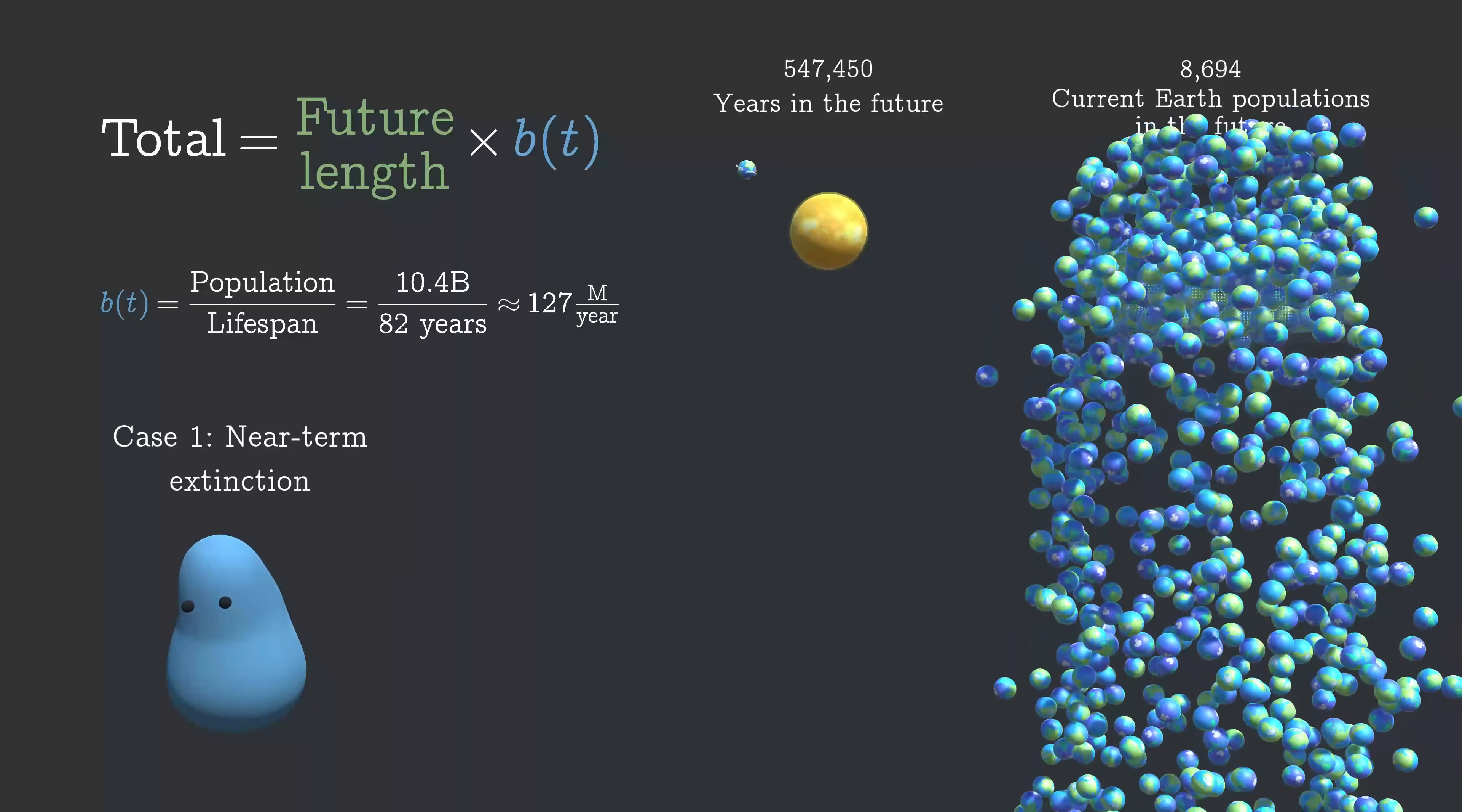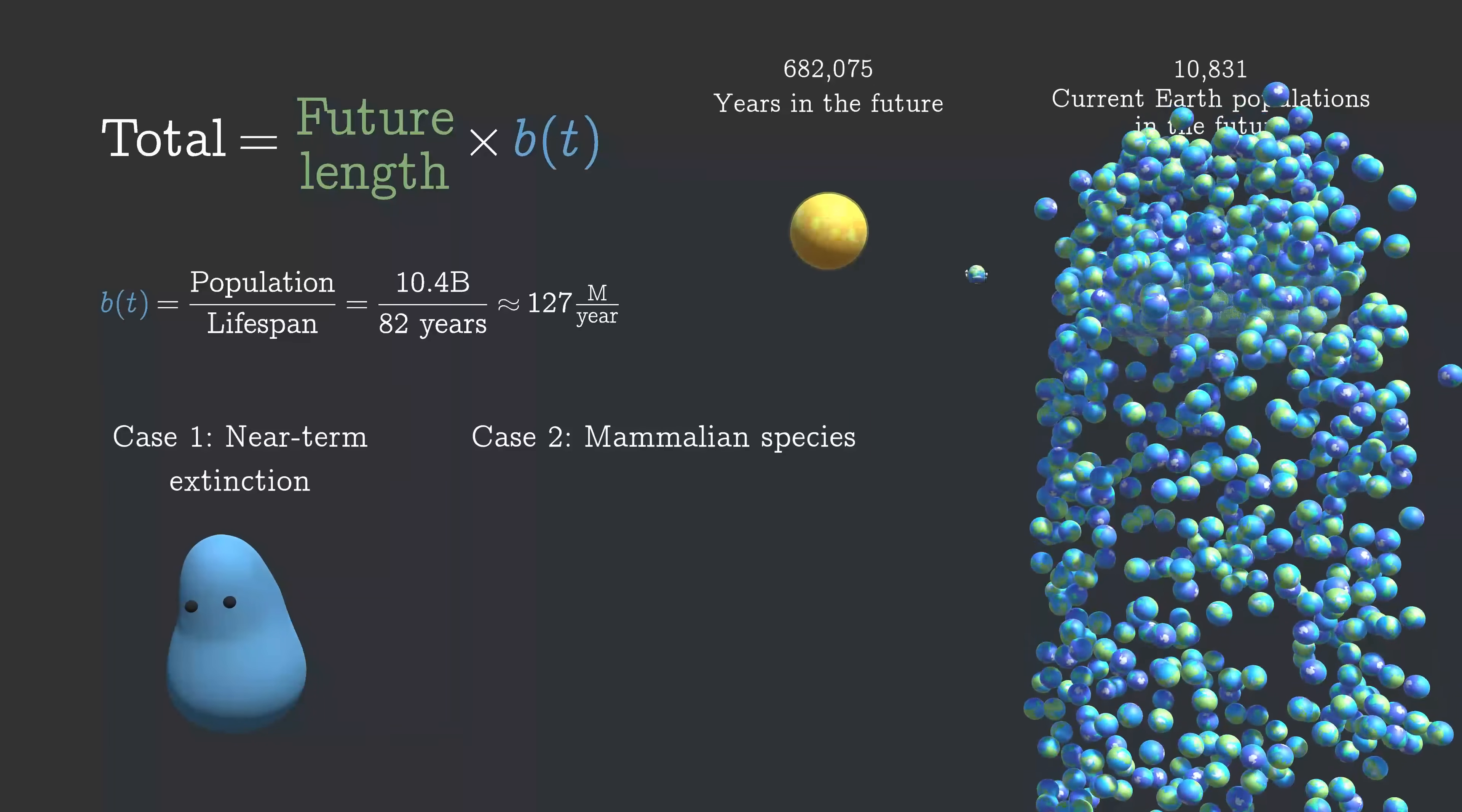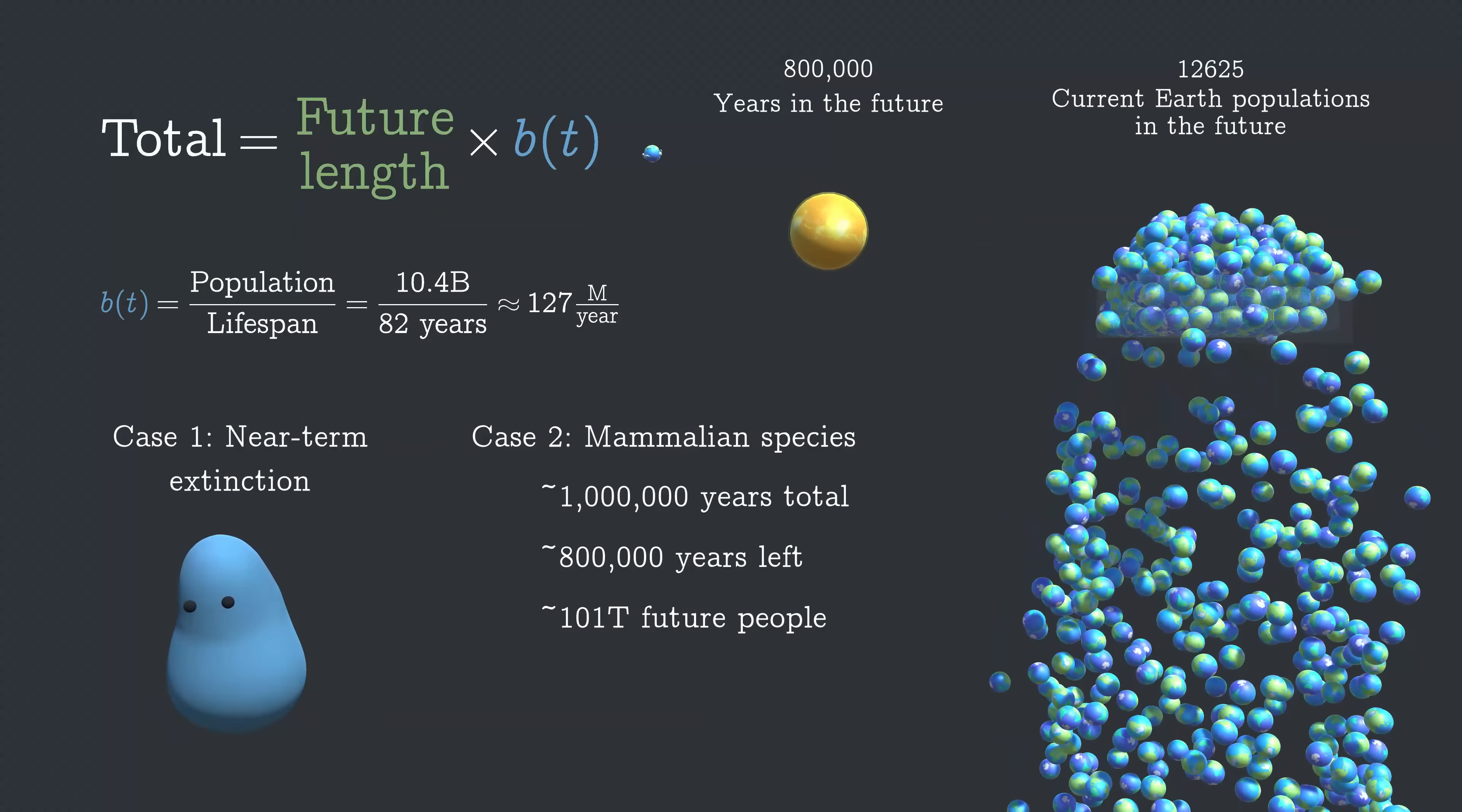The next case is more neutral, where we don't do anything too crazy and we last about as long as a typical mammalian species. There's a range of estimates for how long a mammalian species typically lasts. One million is a round number in that range, so let's use that. With about 200,000 years already behind us, this leaves about 800,000 years to go, leading us to a total of 101 trillion future people.